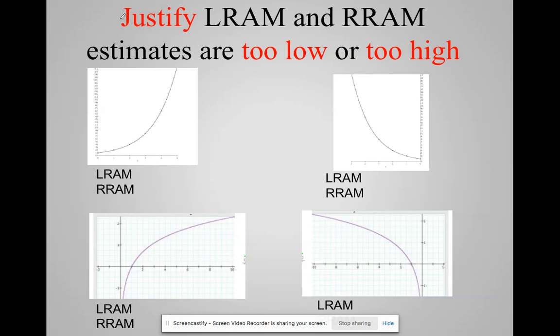And I want to highlight that when you are asked to justify, and you do have to be asked, if you are dealing with your left-hand rectangular approximation method or your right-hand rectangular approximation method, when AP asks you to determine whether the estimates are too high or too low, when you choose, you are going to say too low because the function is increasing or decreasing.